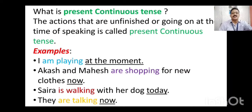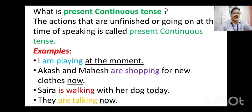When we write 'Akash and Mahes are shopping for new clothes now,' here Akash and Mahes are two boys — two different individuals. If the noun or the subject of the sentence is in plural form, we have to write 'are shopping.' 'Are' is used when the subject is plural. 'Shop' becomes 'shopping' when we add -ing to the verb. 'Are shopping' shows that at present they are doing that work. So 'Akash and Mahes are shopping for new clothes' — 'are shopping' shows that the verb is in present continuous tense.